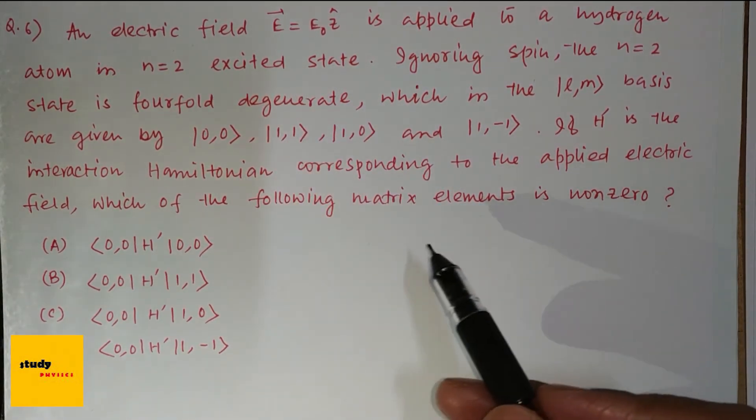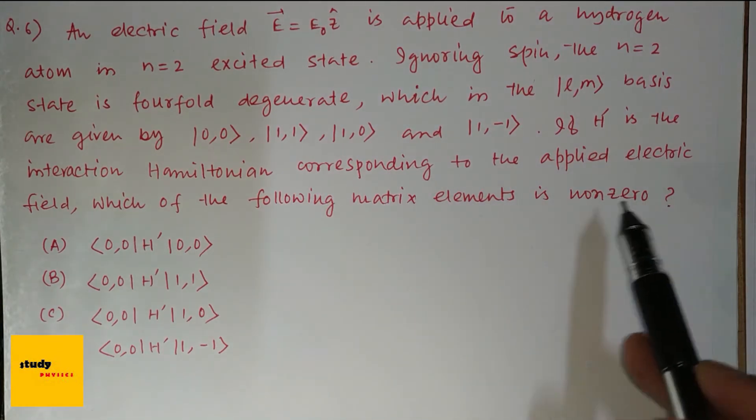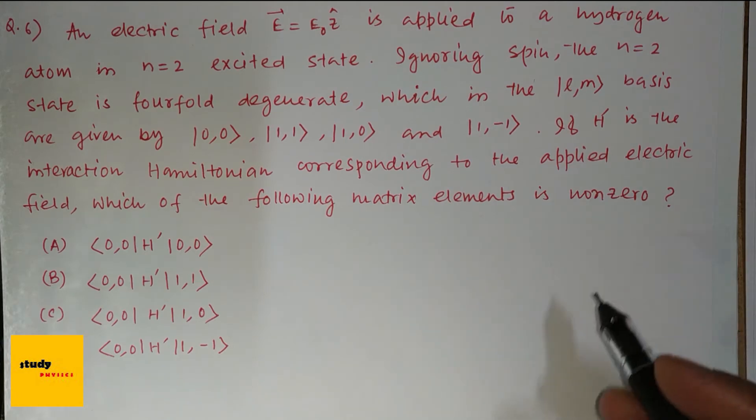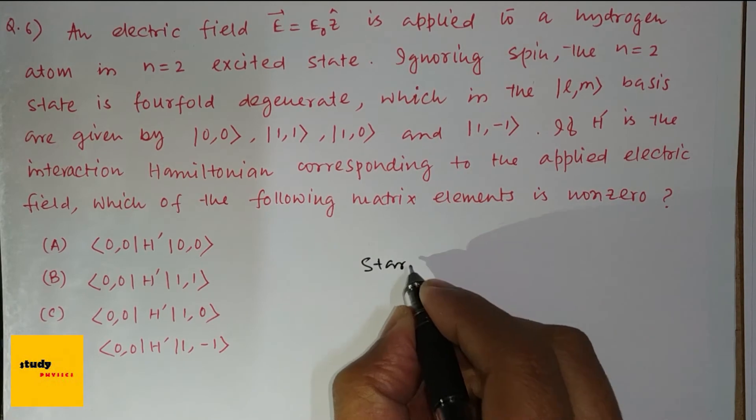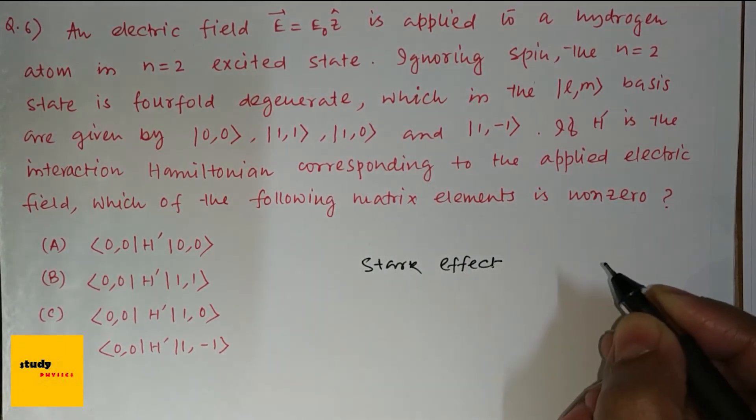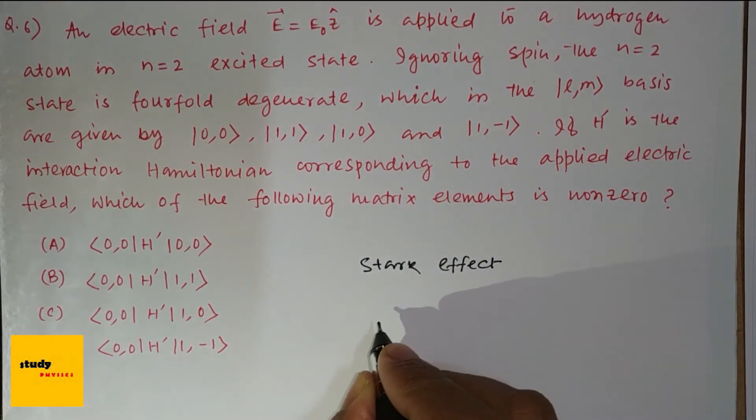And here in this question, they asked that Hamiltonian corresponding to the applied electric field, which of the following matrix element is non-zero? So first of all, it's a stark effect and the matrix element is non-zero.